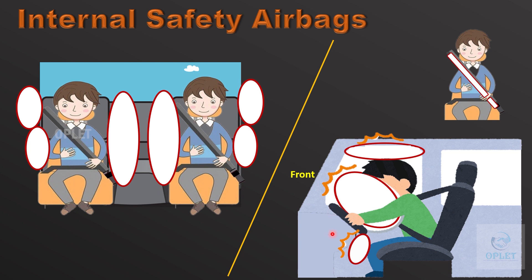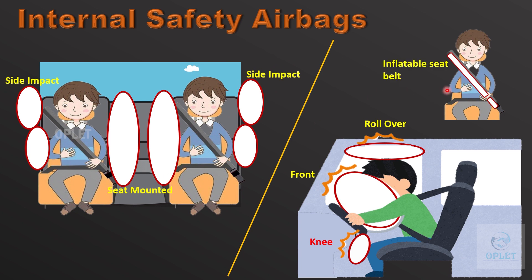Internal safety airbags also include knee airbags for driver and passenger, rollover airbags mounted above the head, side impact airbags also called side curtain airbags, seat mounted airbags, inflatable seat belts, and torso airbags.